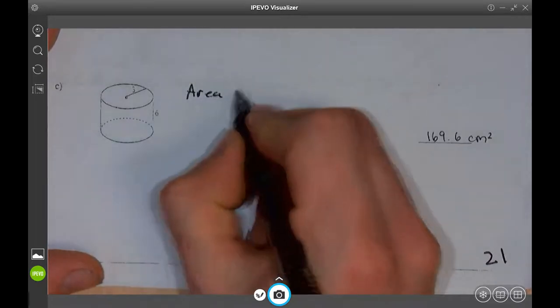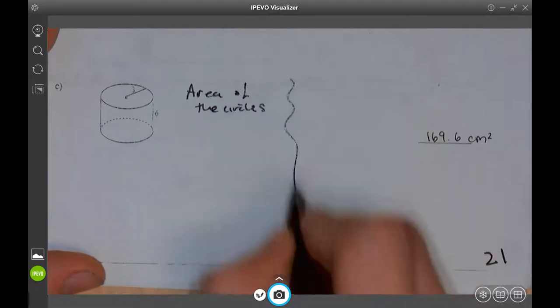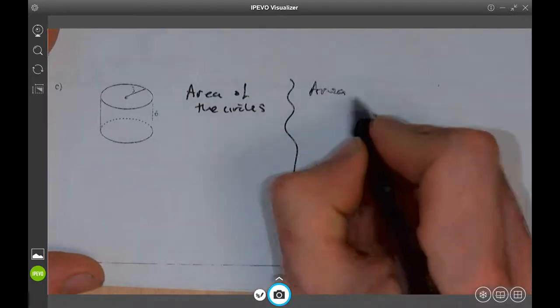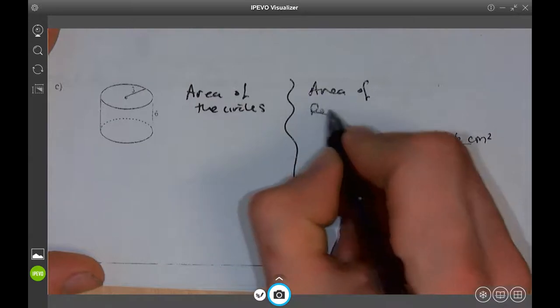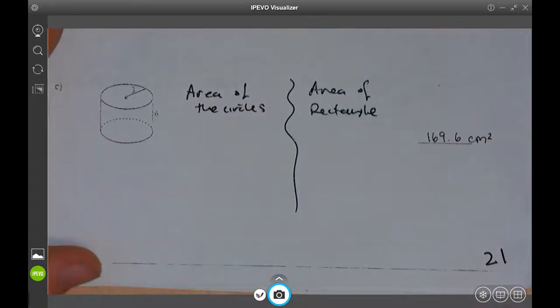Area of the circles and area of triangle. Rectangle? Where does the rectangle come in?